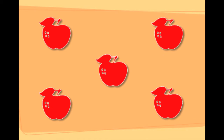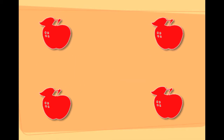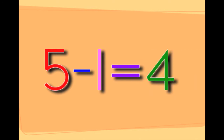These are five apples. Taking one apple away from the five apples will leave you with four apples. Five minus one equals four.